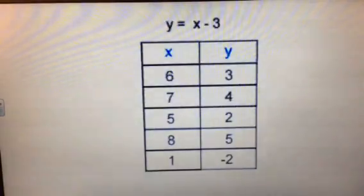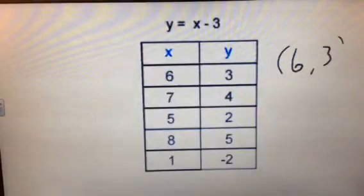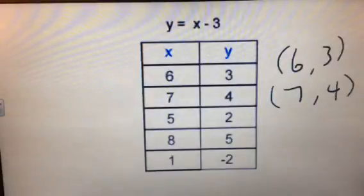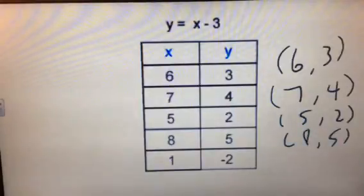Here is our table of values from before. Again, this is what our coordinate points would look like. Remembering it's always x comma y and then we have our brackets.